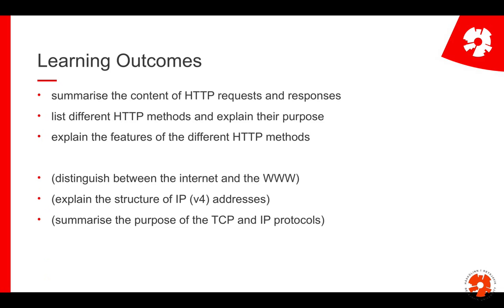The learning outcomes are three official ones and a couple of unofficial ones. You should be able to summarize what HTTP requests and responses contain and what they do, list different methods and their purpose, and explain the features of different HTTP methods. The unofficial outcomes are that you should be able to distinguish the difference between the internet and the World Wide Web, explain IP address structures, and summarize TCP/IP.